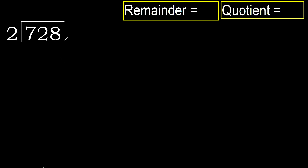728 divided by 2. 7 is not less, therefore with 7: 2 multiplied by which number is nearest to 7 but not greater? 2 multiplied by 4 is 8 — 8 is greater. Multiply by 3: 6 is not greater. Subtract: 7 minus 6 is 1.